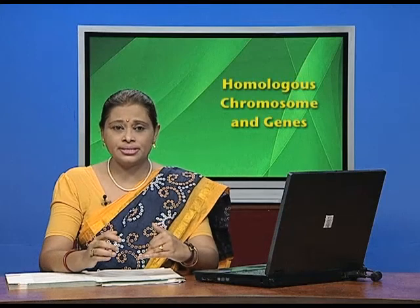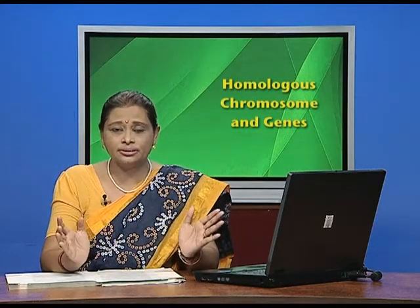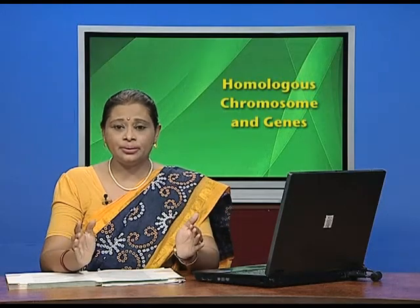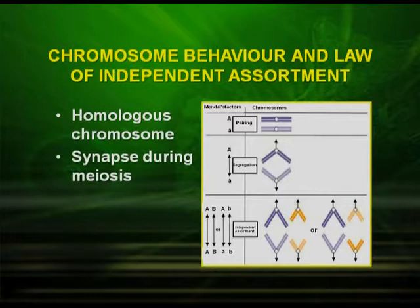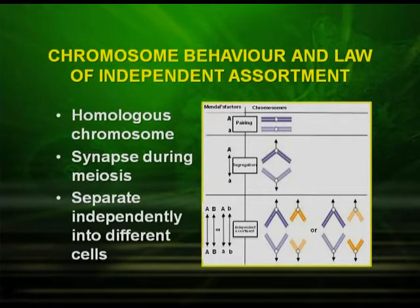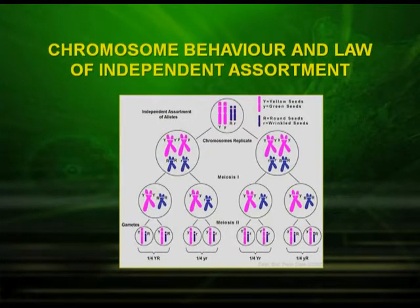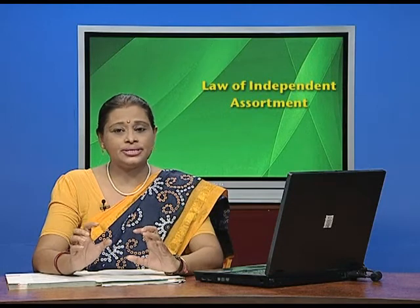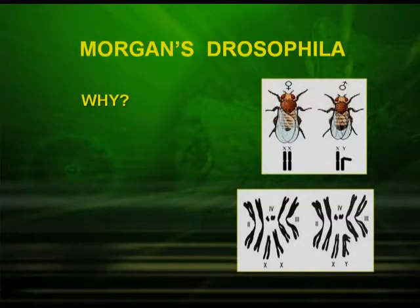In Mendel's dihybrid cross, alleles assort independently in the F2 generation, forming recombinant types. Similarly in chromosome behavior, homologous chromosomes synapse during meiosis but separate independently into different cells during gamete formation. The experimental proof that chromosomes carry genes was provided by Morgan, who used the fruit fly Drosophila for his experiments. He chose Drosophila because it has a short generation period, only four chromosomes, and is easy to rear and harmless.